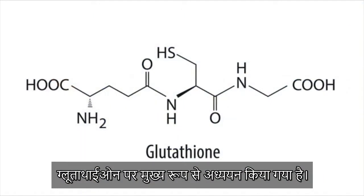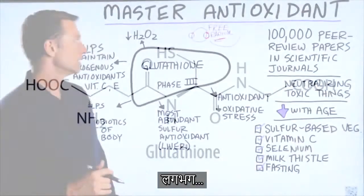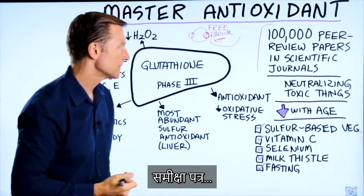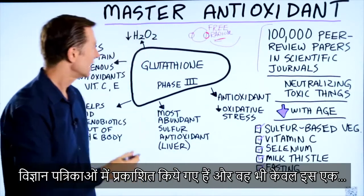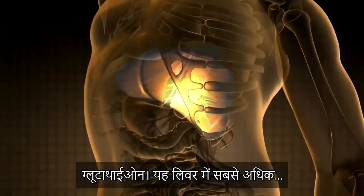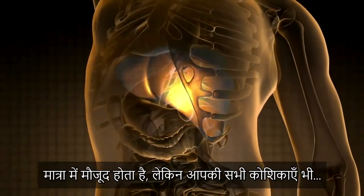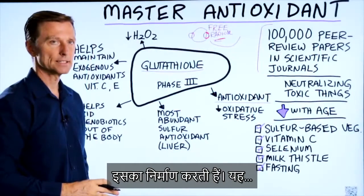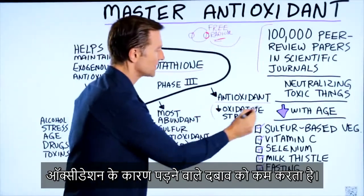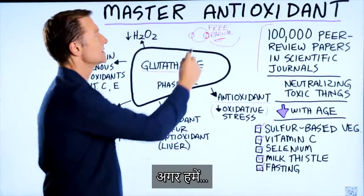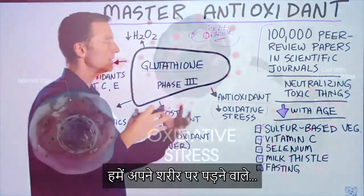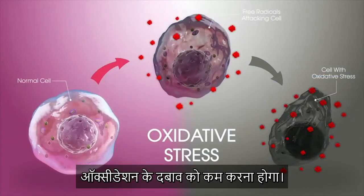Glutathione has been majorly studied — there are over 100,000 peer-reviewed papers in scientific journals on this one compound. It's the most abundant antioxidant in the liver, but all your cells make it. It reduces oxidative stress, so by balancing out these free radicals, we reduce the amount of oxidation and stress on the body.